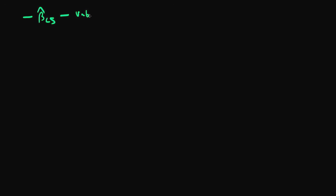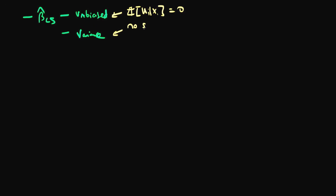To prove unbiasedness we actually need to make use of one of the assumptions of the Gauss-Markov criteria, which is the zero conditional mean of errors — written mathematically as E[u_i | x_i] = 0. Secondly, we need to find the variance of the least squares estimators, and to do that we are going to assume two things: no serial correlation between the errors, and that the errors are homoscedastic. Those are the conditions under which we derive the variance for the least squares estimators.